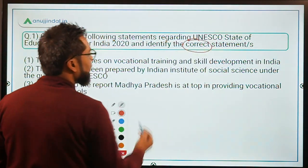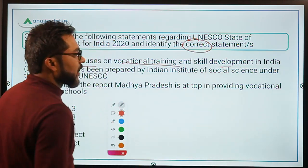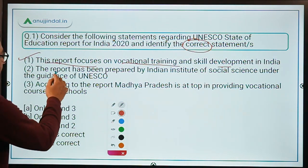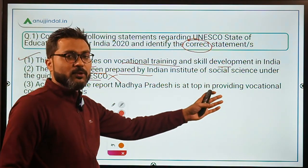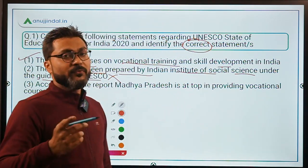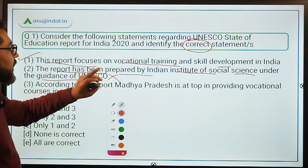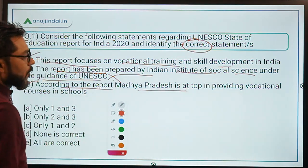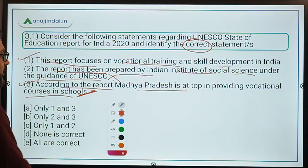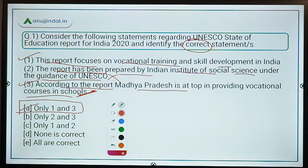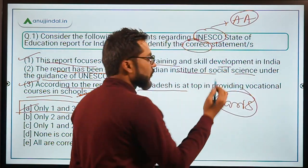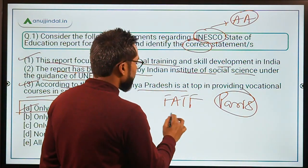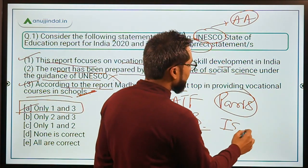Analyzing the statements: Statement 1 — the report focuses on vocational training and skill development in India — is correct. Statement 2 — the report was prepared by the Indian Institute of Social Science — is incorrect; it is the Tata Institute of Social Sciences in Mumbai. Statement 3 — Madhya Pradesh is at the top in providing vocational courses in schools — is correct. So the answer is option A (statements 1 and 3 only). UNESCO is headed by Audrey Azoulay and headquartered in Paris, where FATF, Reporters Without Borders, and the International Energy Agency are also located.